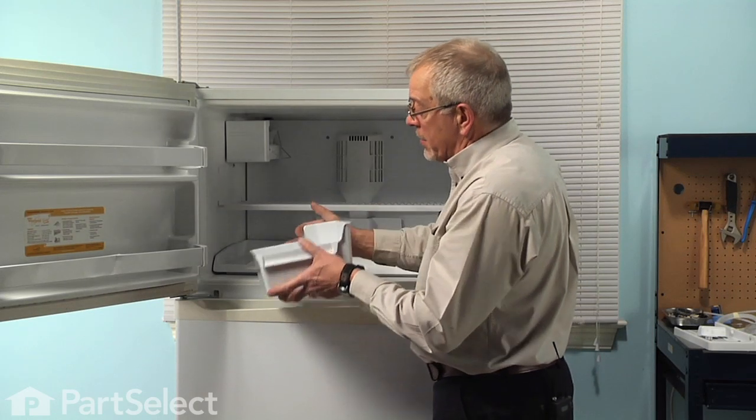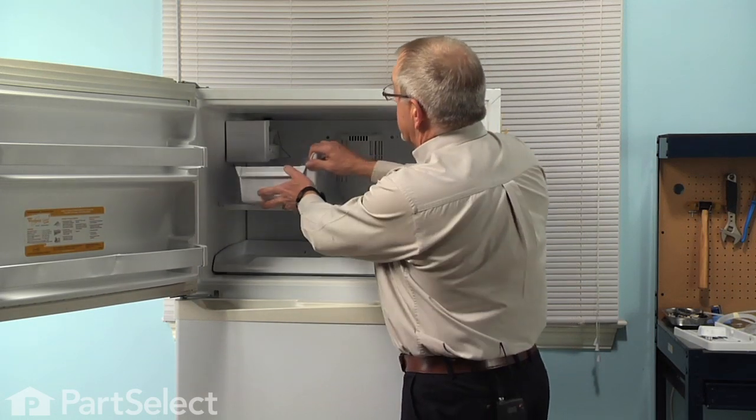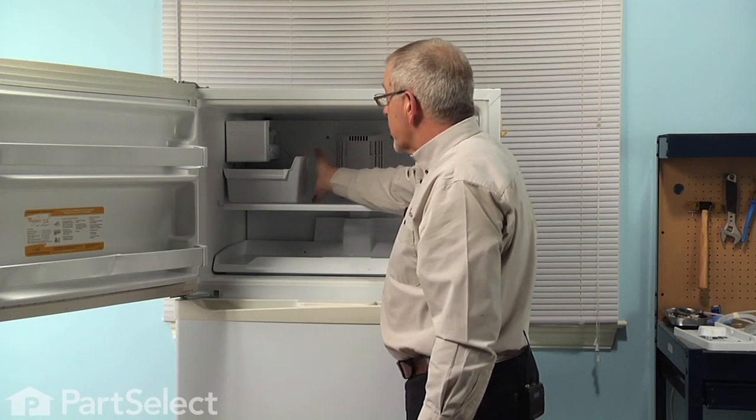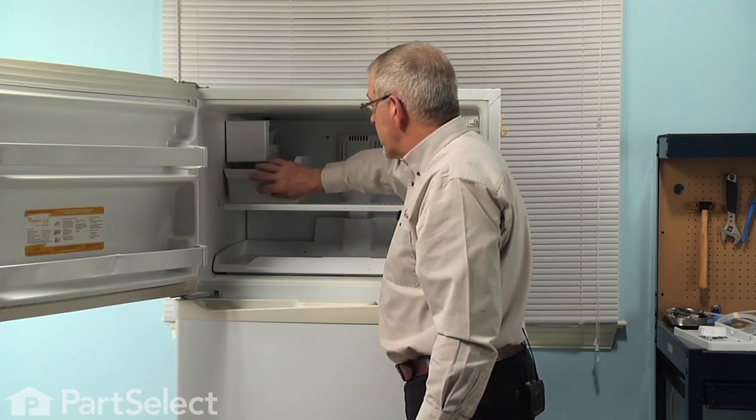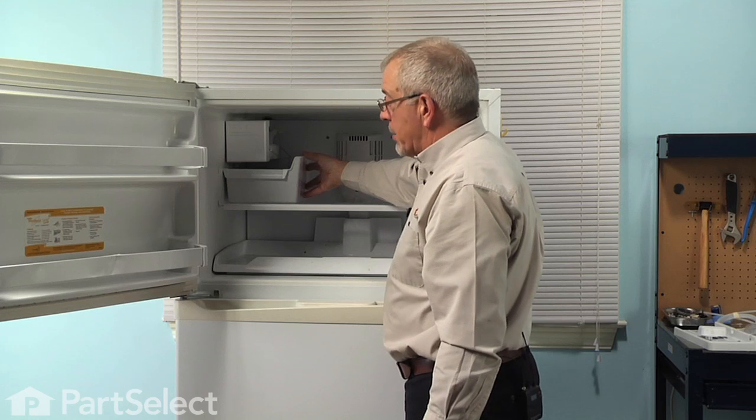You'll note that one side of that bin is lowered and that's the side that goes in underneath the ice maker. You need to make sure that that stays in that position tight up against the back wall, tight up against the left hand side.